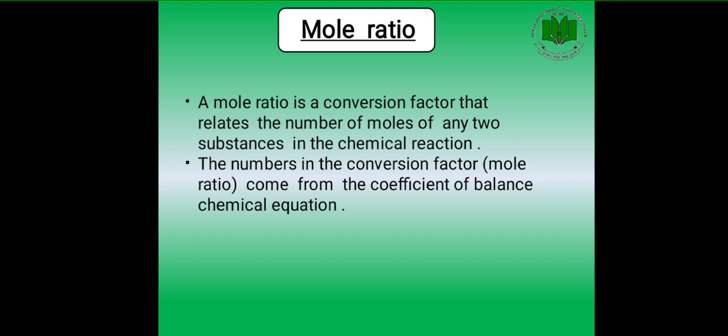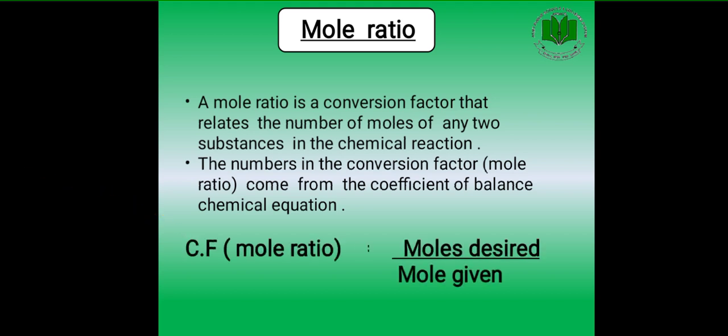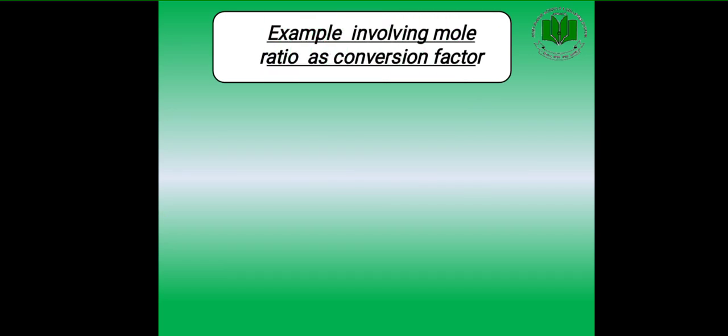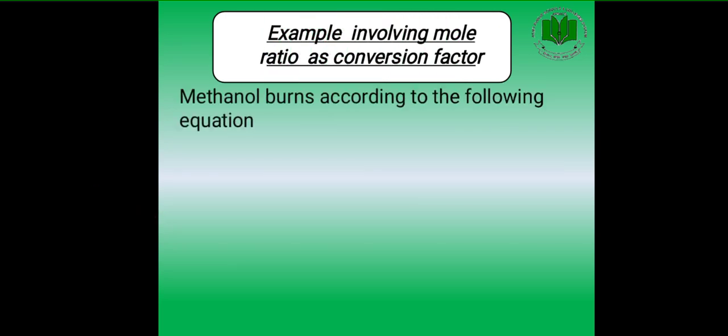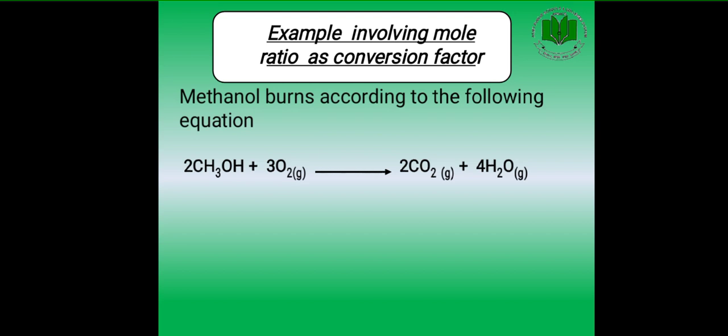Remember that when you have a conversion factor to find, whether it is a mole ratio or mass ratio, its values always come from the balanced chemical equation. If you have a mole ratio, you will write it as moles desired over moles given. Now we are going to discuss an example involving mole ratio as a conversion factor. The statement given in your book is that methanol burns according to the following equation.